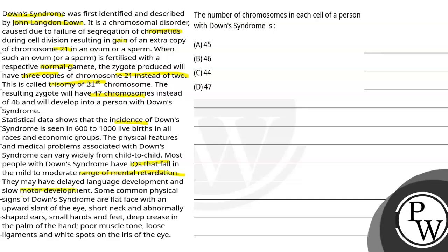Some physical signs of Down syndrome are flat face with an upward slant of the eye and short neck, abnormally shaped ears, small hands and feet, deep crease in the palm of the hand, poor muscle tone, loose ligaments, and white spots on the iris of the eye.